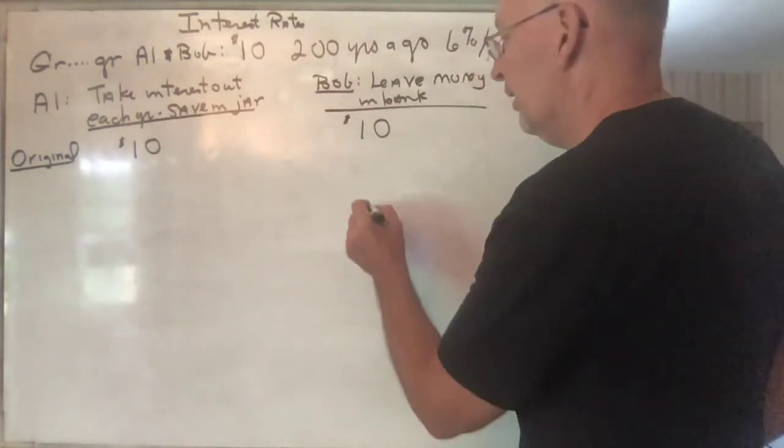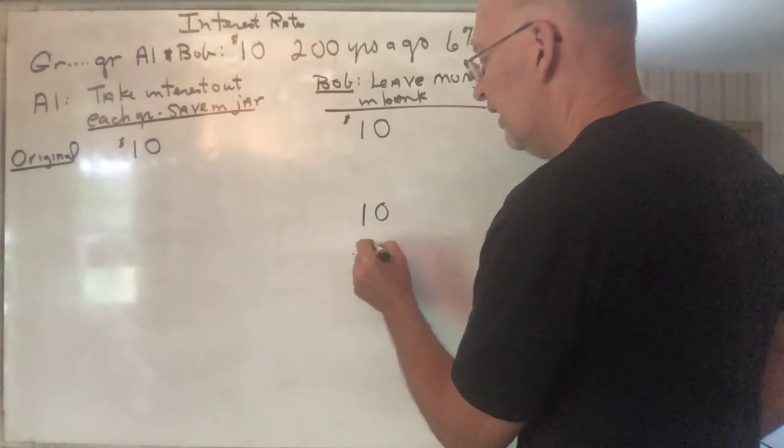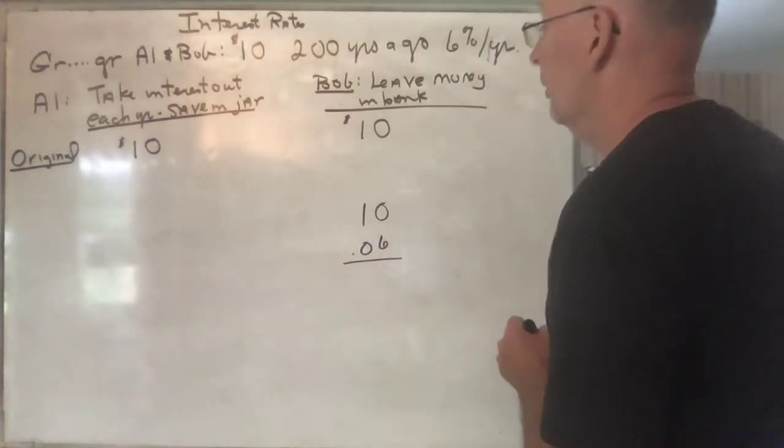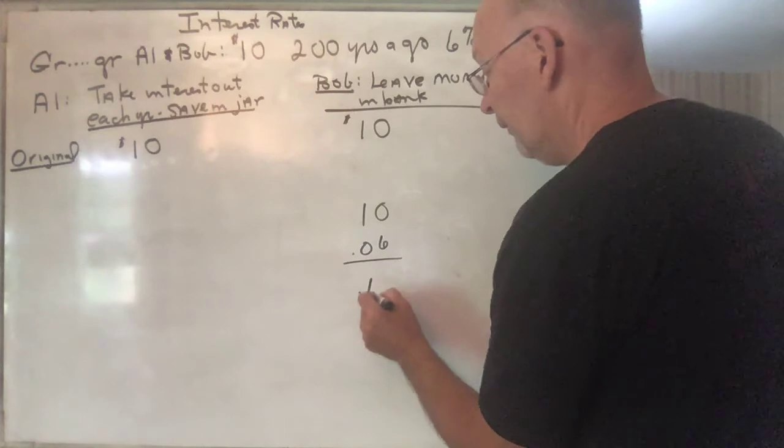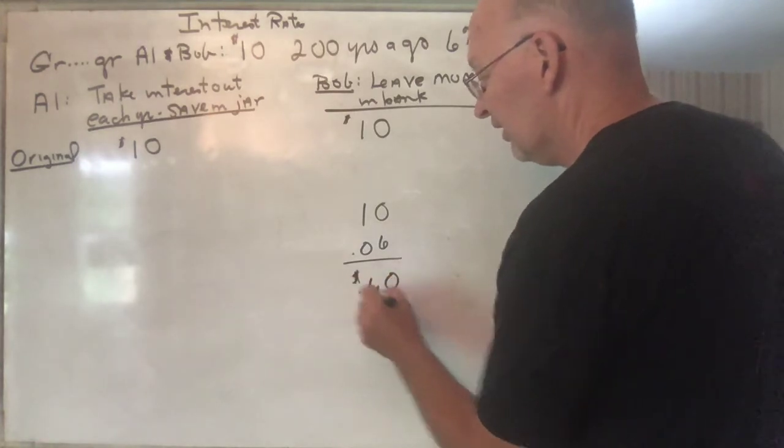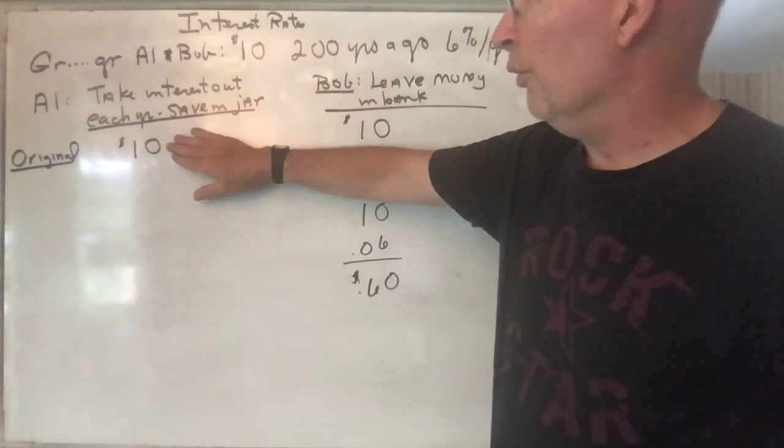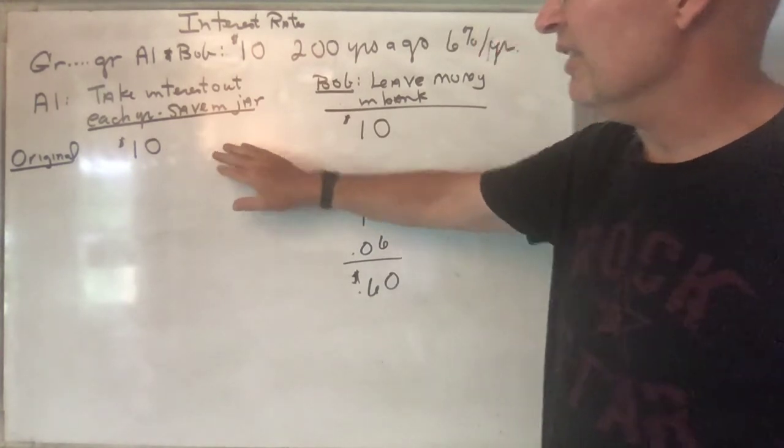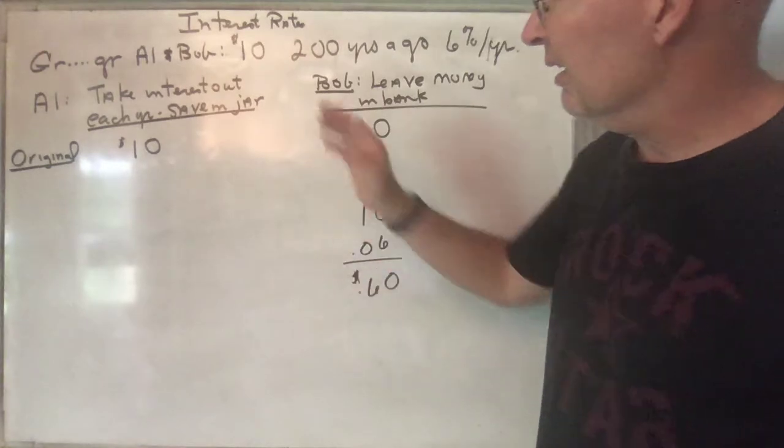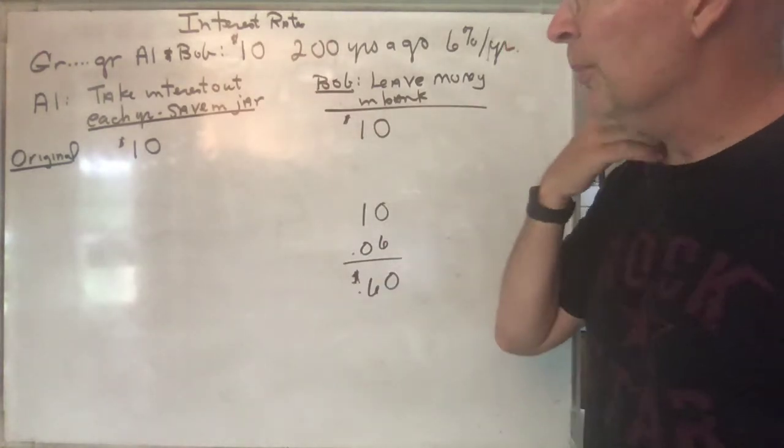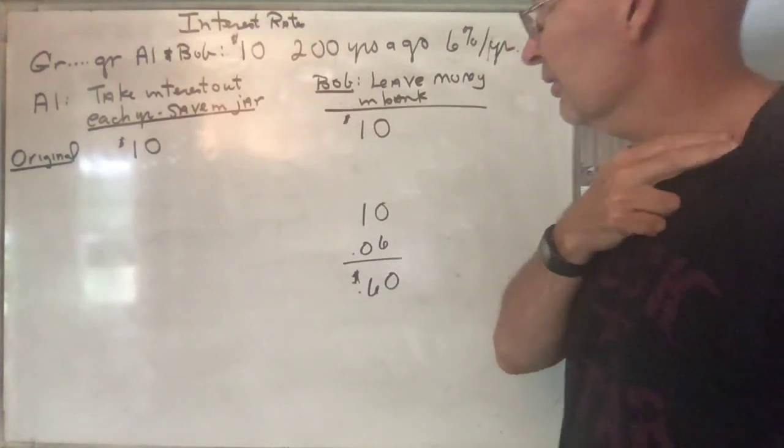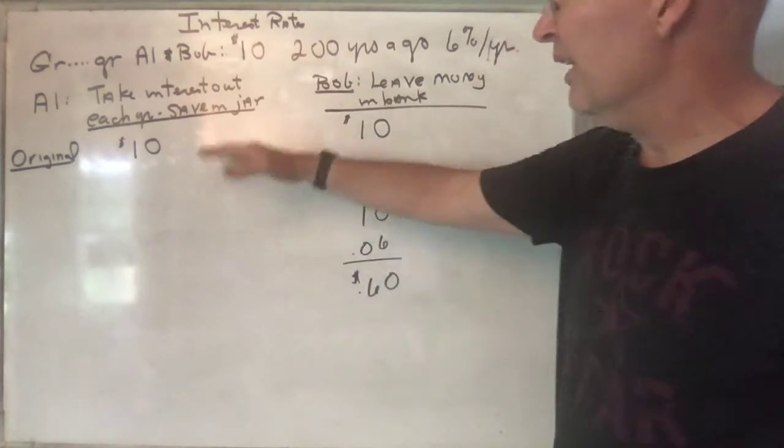So let's think about it: you have $10 and you have $0.06 as your interest rate, so every year you would earn 60 cents. Okay, so every year he left instructions for the bank to take that 60 cents out and just put it in a container, put it in a jar, put it under the mattress, put it in a cookie jar, whatever.